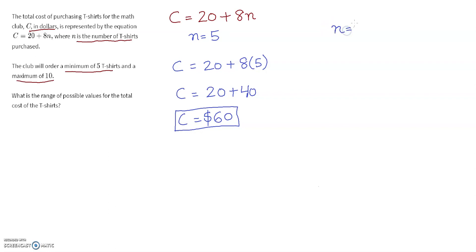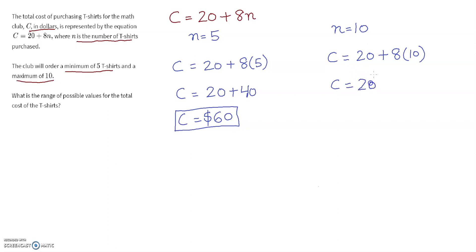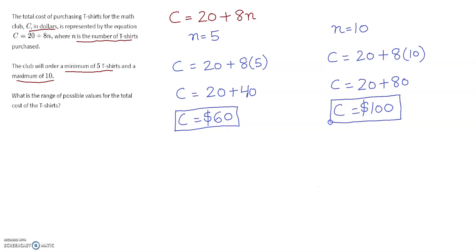Now for the maximum order of 10 t-shirts, we use the same equation and substitute n equals 10. Following order of operations, multiplication first: 8 times 10 is 80. Then 20 plus 80 gives C equals $100. So you will pick the option showing a range between $60 and $100.